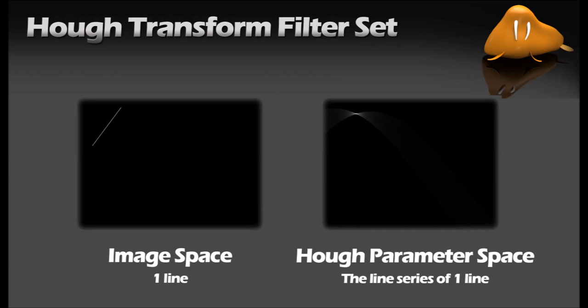We draw all the possible series of lines for every edge pixel on the same parameter space. Those points in the parameter space which have many curves crossing on them represent a set of edge points which are collinear. So by filtering the parameter space searching for points which are accumulating collinear edge points, we can detect lines on the original image.